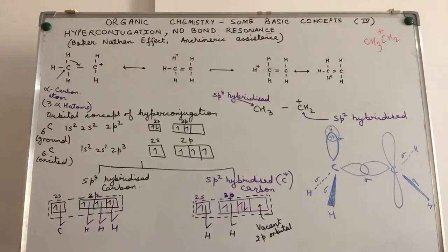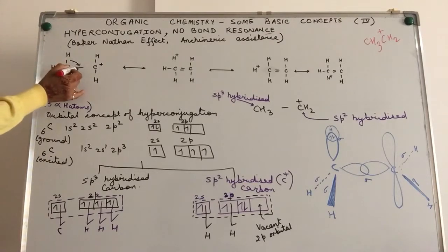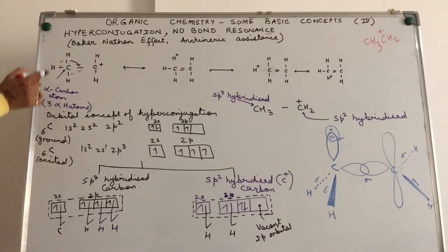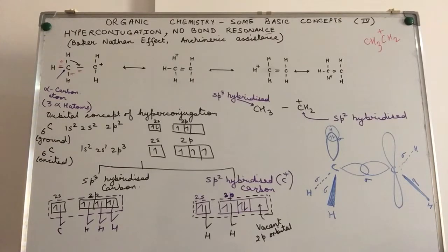The positive sign means its octet is not complete — it is short of electrons. Single bond means there are sigma bonds at all these places. This carbon carries a positive charge, so the carbon next to it will be the alpha carbon atom. The hydrogen atoms attached to it are known as the alpha hydrogen atoms. A very essential condition for hyperconjugation to take place is the presence of hydrogen on the alpha carbon atom — there should be alpha hydrogen atoms present in the group.